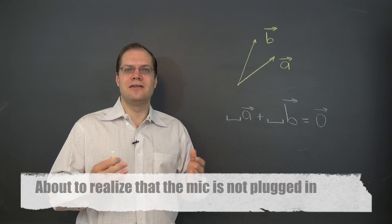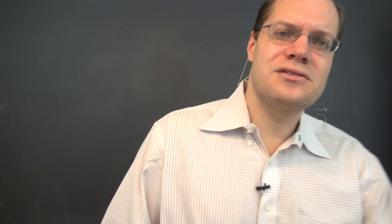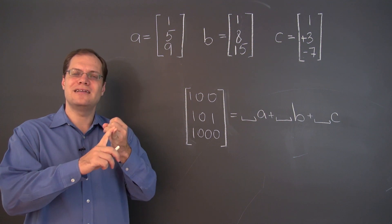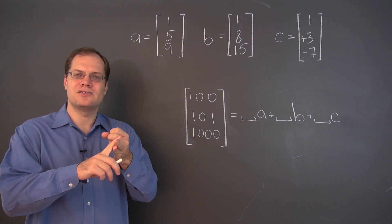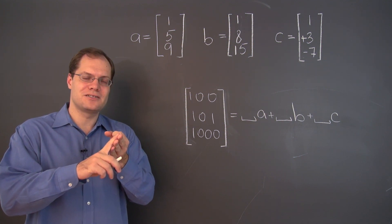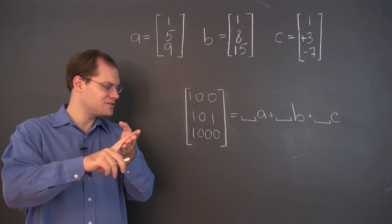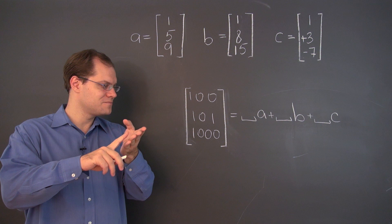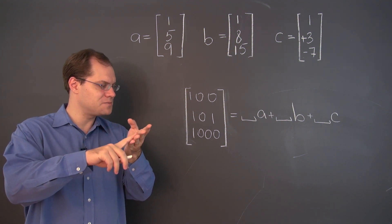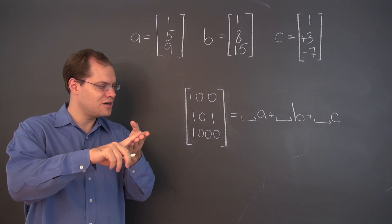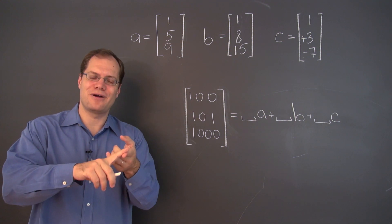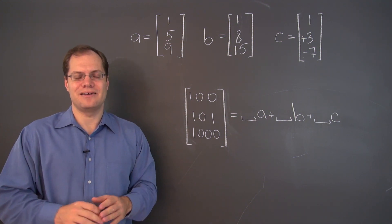When we're down to one vector, the terms linear property, subspace, closure under addition multiplication, and linear property all mean the exact same thing.